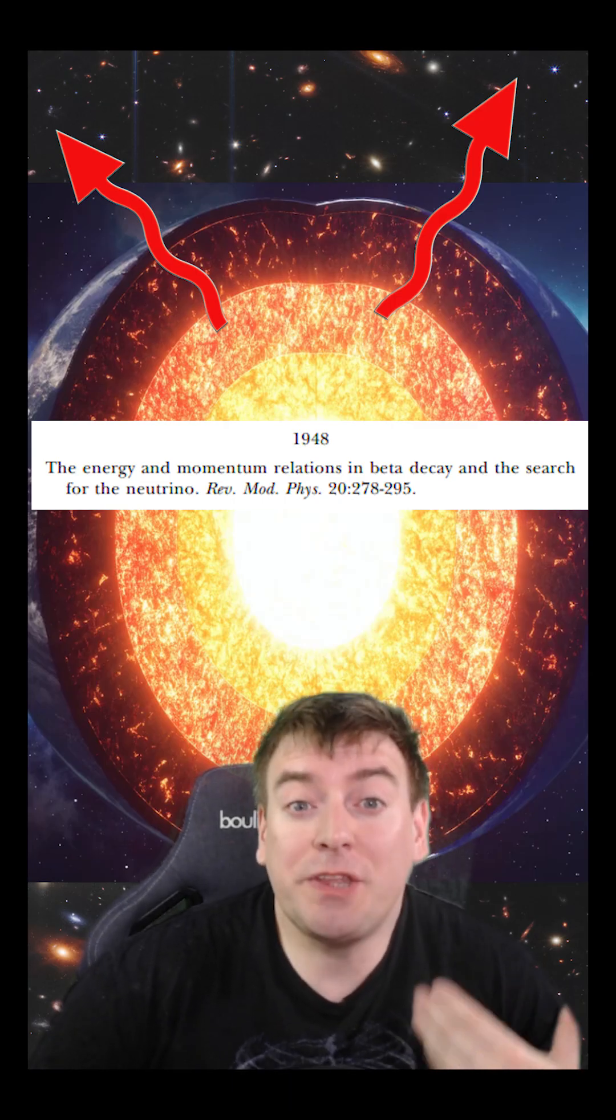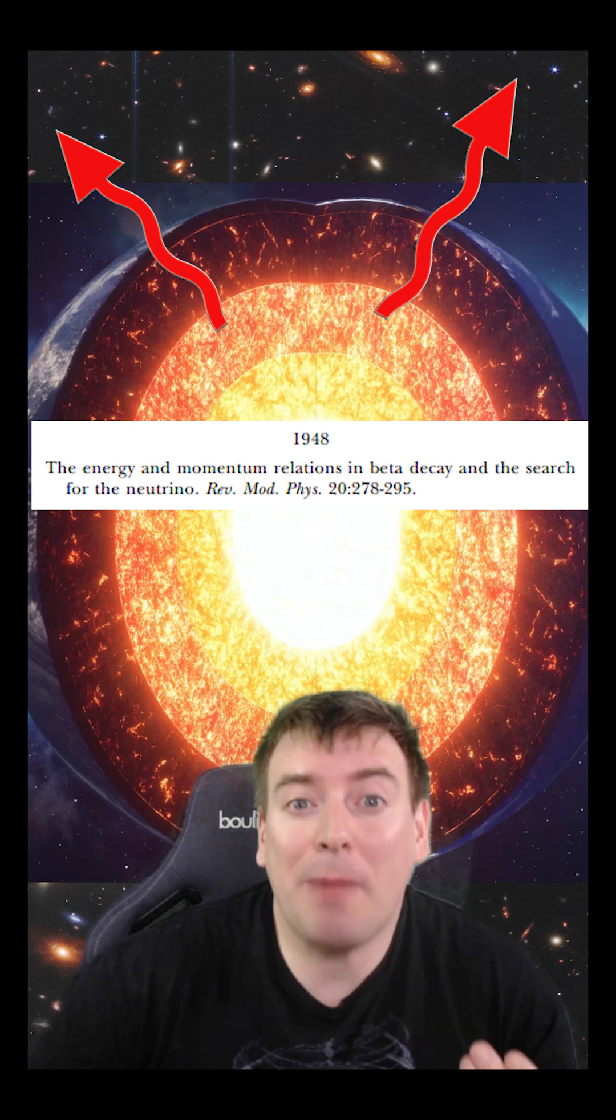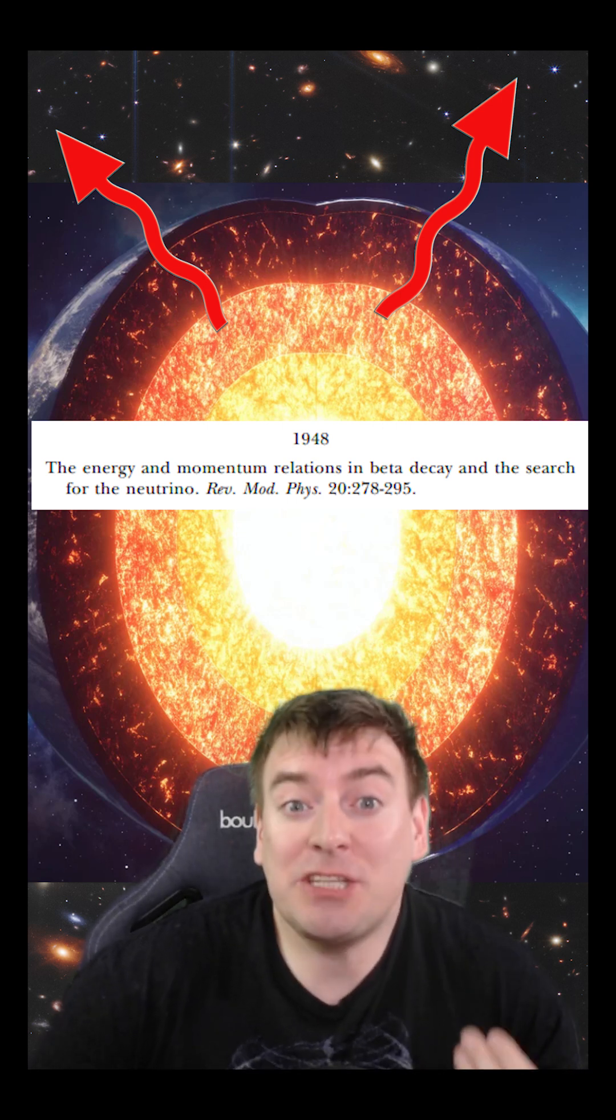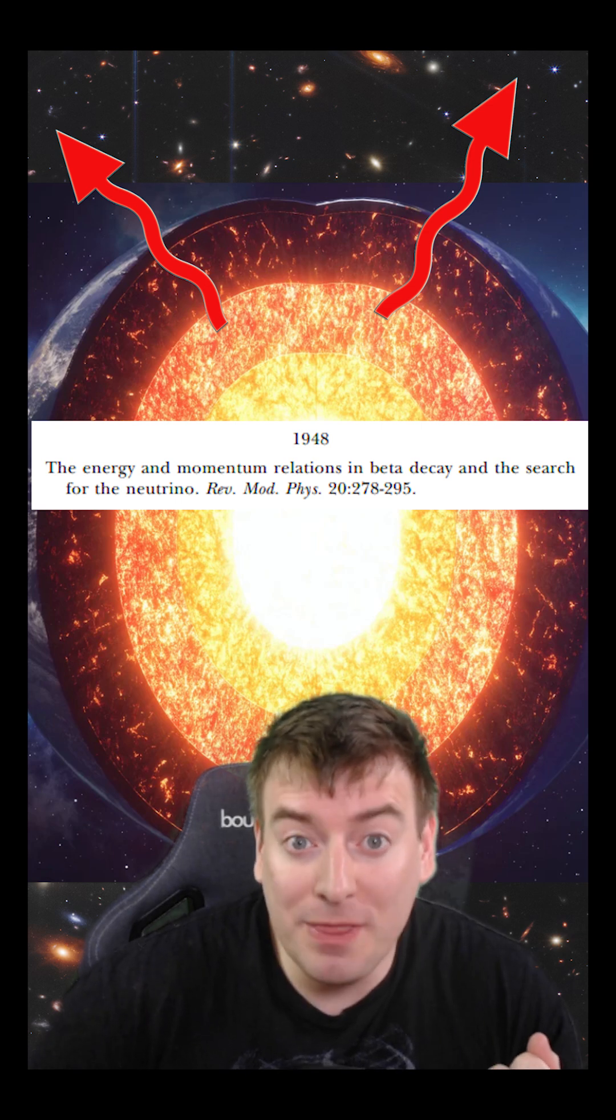By comparing these calculations with geophysical observations of the amount of heat flowing out of the Earth, Crane was able to set an upper limit on the interaction rate of the neutrino with matter.